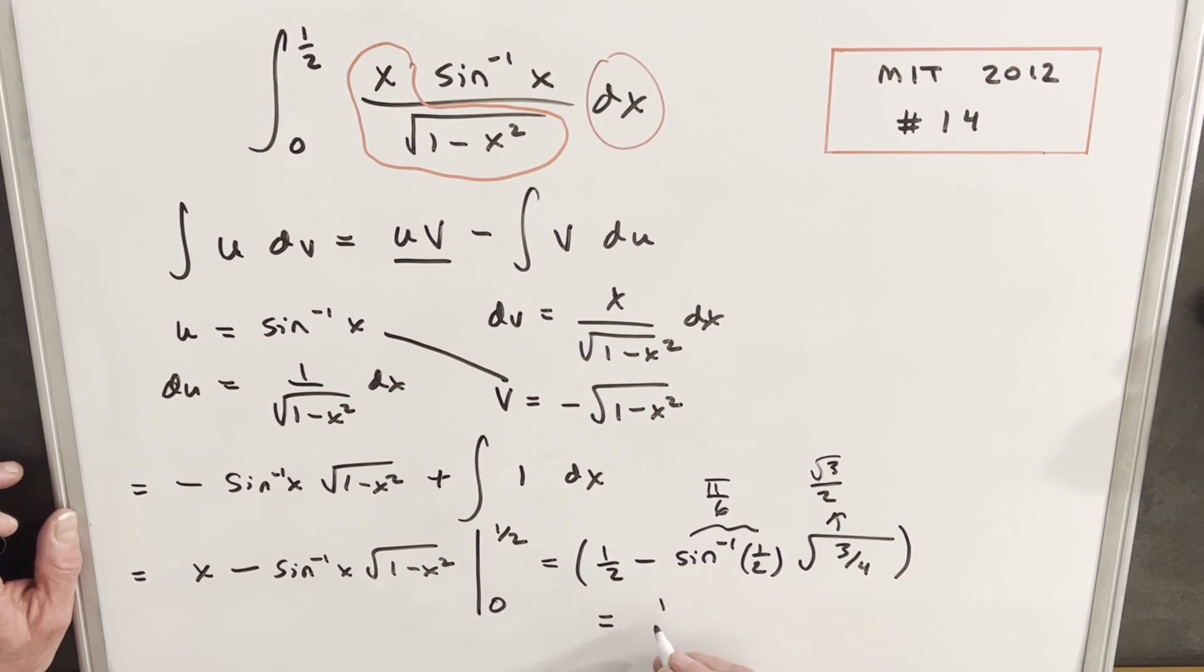So then for our final solution, putting it all together, we're going to have 1/2 minus square root of 3 π over 12, and that's it.